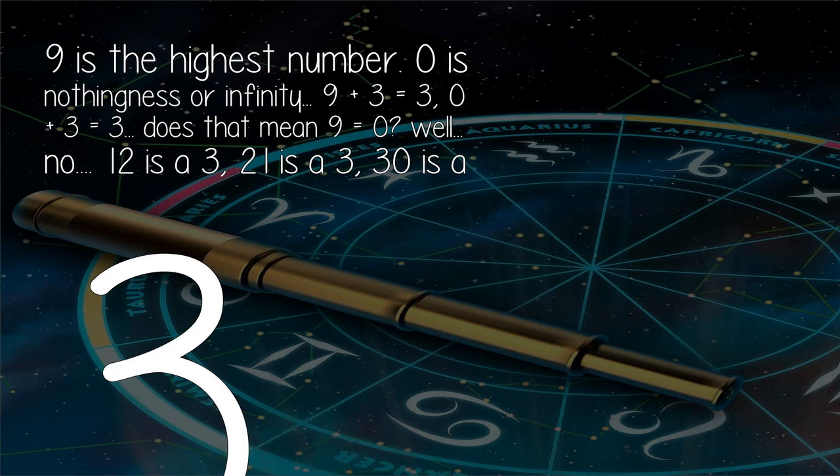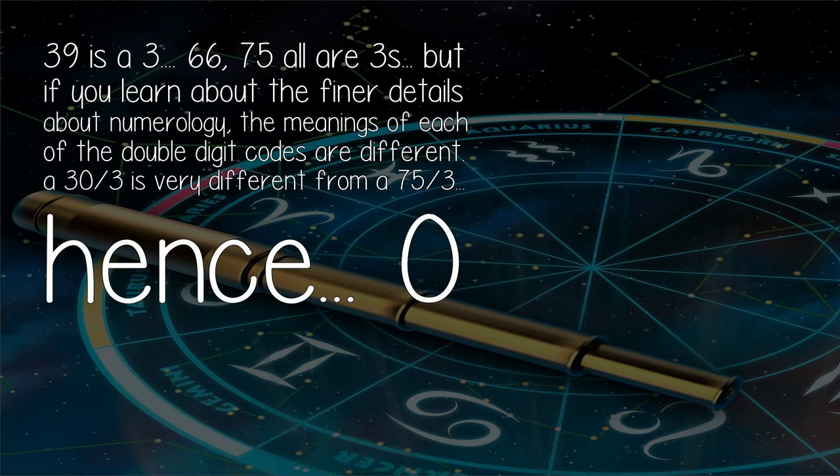Well no. 12 is a 3, 21 is a 3, 30 is a 3, 39 is a 3, 66, 75, all are 3s. But if you learn about the finer details about numerology, the meanings of each of the double-digit codes are different.